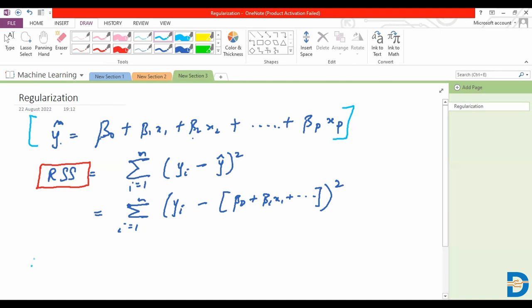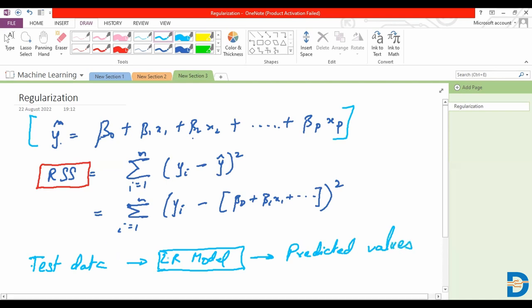And once developed, we are able to give our unseen data, or the test data, to this model. Here we can say the linear regression model, in order to get the predicted values. So what's happening in order to build a relationship in the first place, which is happening based on our training data set?